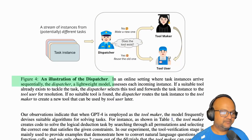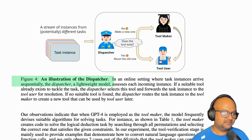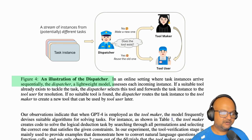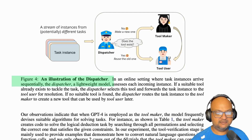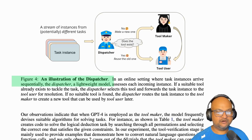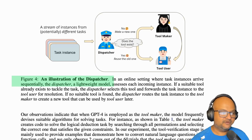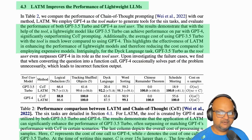The final piece of the puzzle is that you need some sort of logic, which they call a dispatcher, to check if a tool exists for a class of problems. If it does, then send the problem to the tool using LLM. If it doesn't, then try to construct a tool for that class of problems with the tool making LLM.